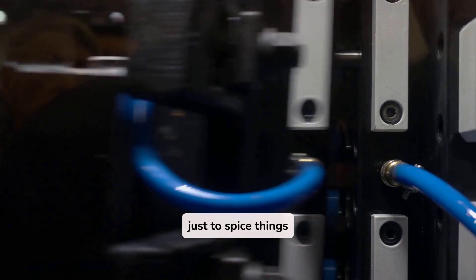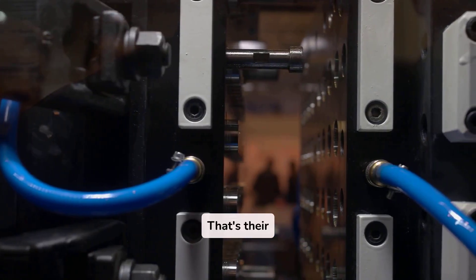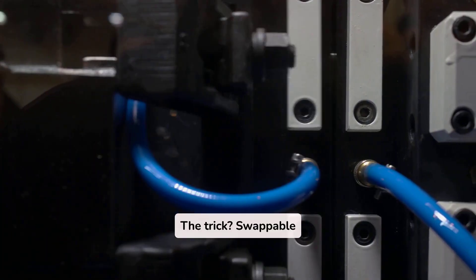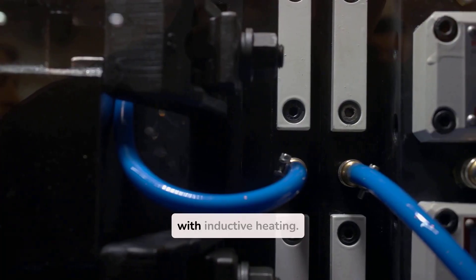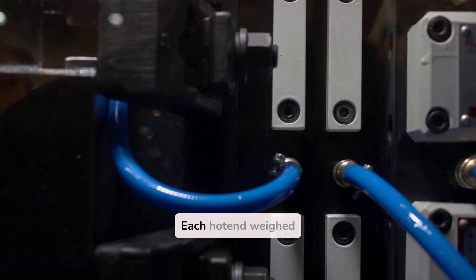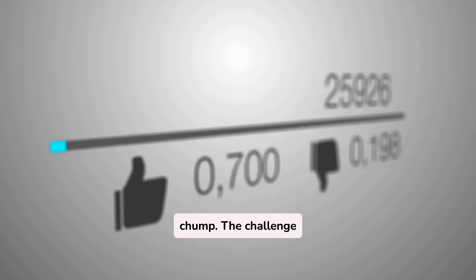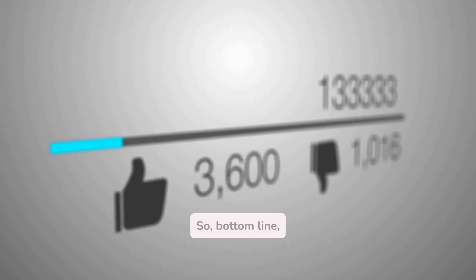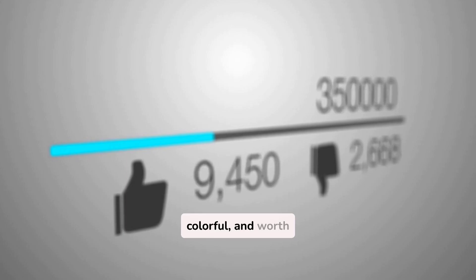And just to spice things up, Bamboo teased the H2C. That's their multicolor feature. The trick – swappable hotends. No wires, no plugs. All wireless with inductive heating. Each hotend weighs just 10 g. About the size of a thumb. The challenge is micrometer-level repeatability. But they're solving it. So, bottom line – H2S is here. Bigger, faster, smarter. H2C is coming. Wireless, colorful. And worth the wait.